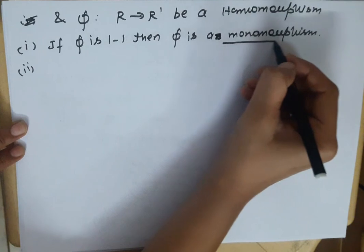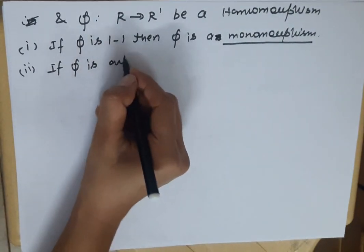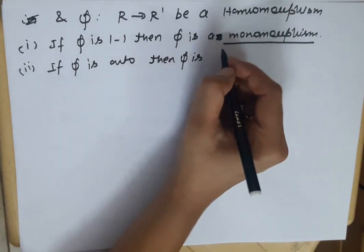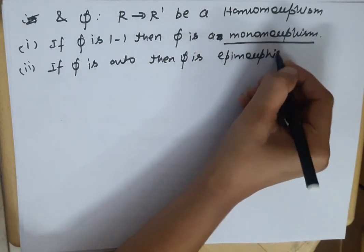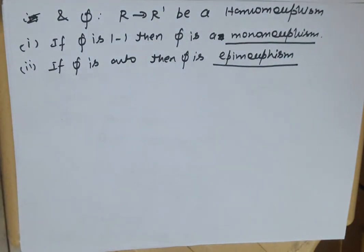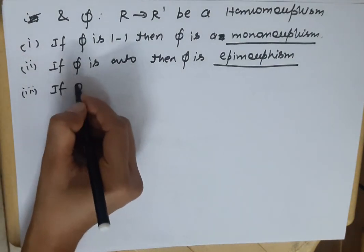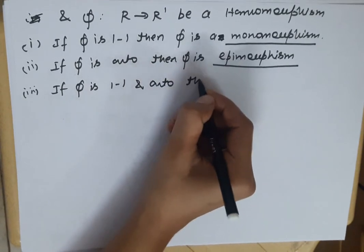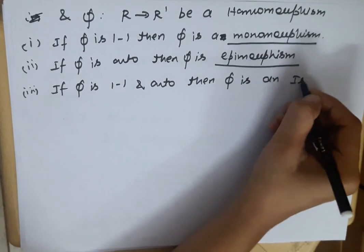Let us underline it. Second: if φ is onto, then φ is an epimorphism. Third: if φ is one-to-one and onto, then φ is an isomorphism.